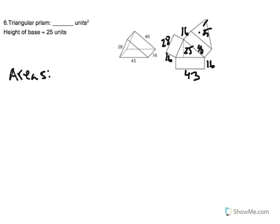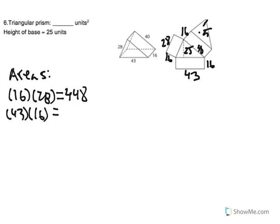So then we have 16 times 28, this gives us 448. And 43 times 16 gives us 688. And 40 times 16 gives us 640. And for the triangle,